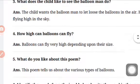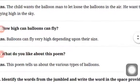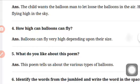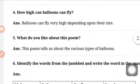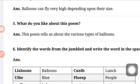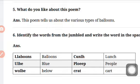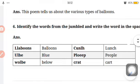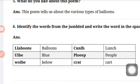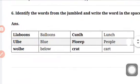What does the child like to see the balloon man do? Answer is, the child wants the balloon man to let loose the balloons in the air. He wants to see them flying high in the sky. How high can balloons fly? Answer is, balloons can fly very high depending upon their size. What do you like about this poem? Answer is, this poem tells us about the various types of balloons. Then number 6 is, identify the words from the jumbled and write the words in the space provided. What do we have to do?